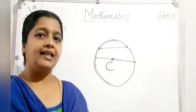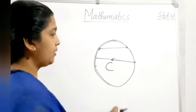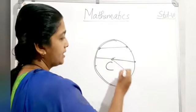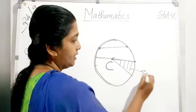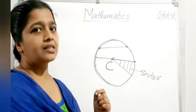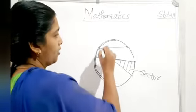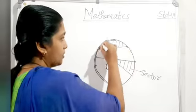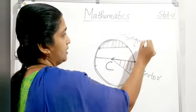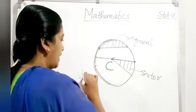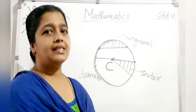A sector is a region in the interior of a circle enclosed by an arc on one side and a pair of radii on the other two sides — that is the sector of a circle. A segment of a circle is the region in the interior enclosed by a chord and an arc. The diameter is the longest chord and each half is a semi-circle.